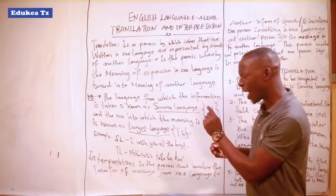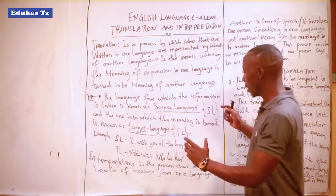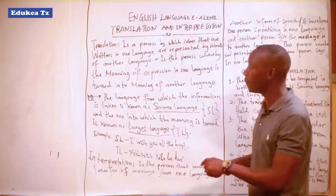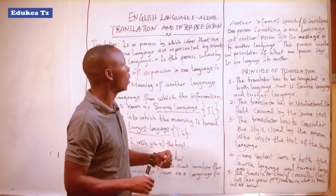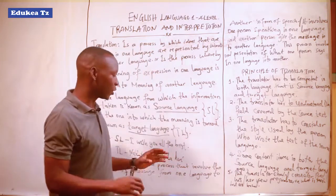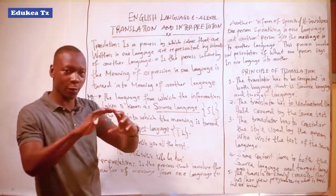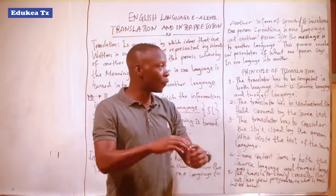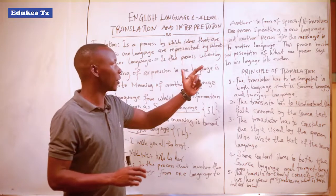Comparing translation and interpretation, there is a slight difference. Translation involves written form, and interpretation involves spoken form. But both involve turning one language into another language. Translation is presented in written form, and interpretation is presented in the form of speech. The speech and the written form are what differentiate translation from interpretation.